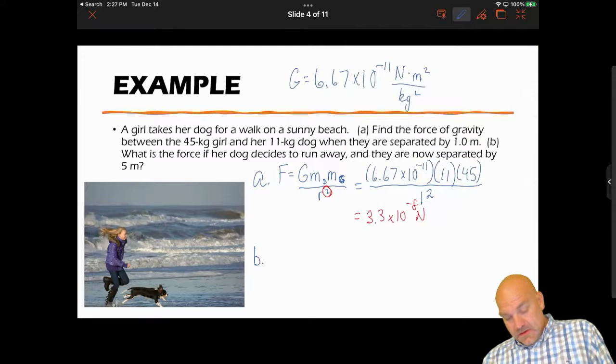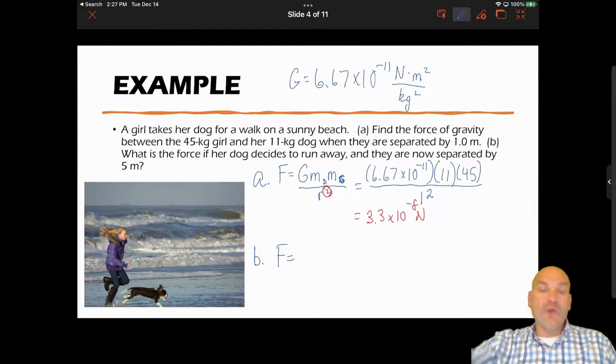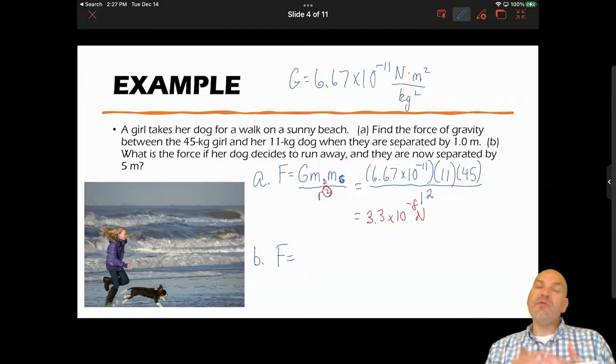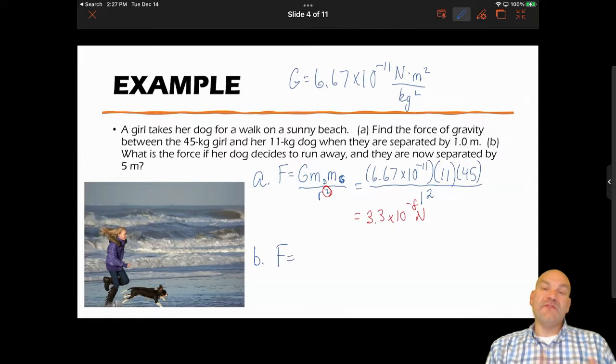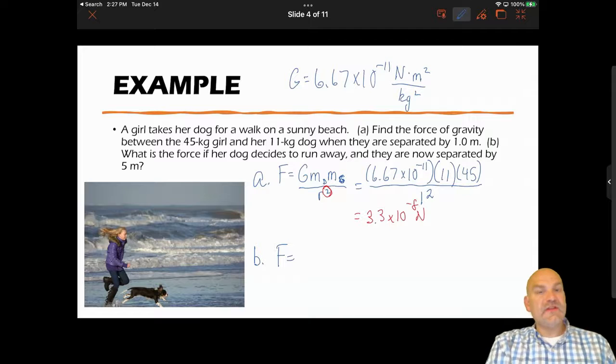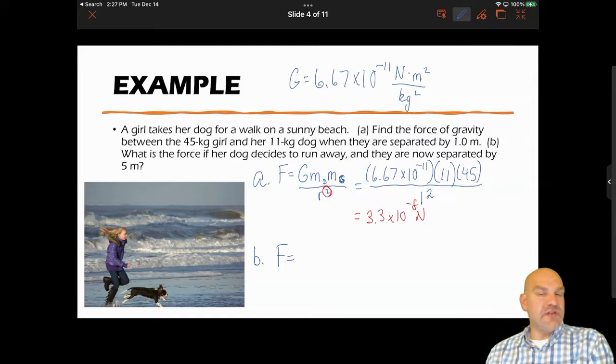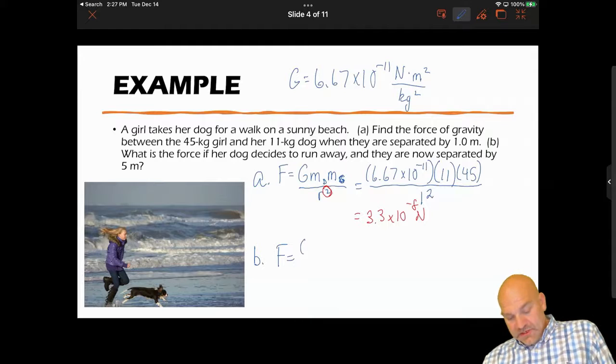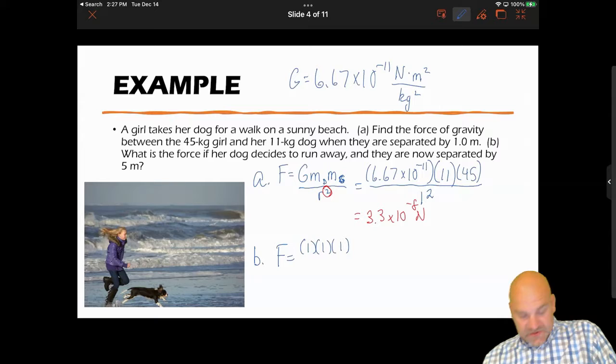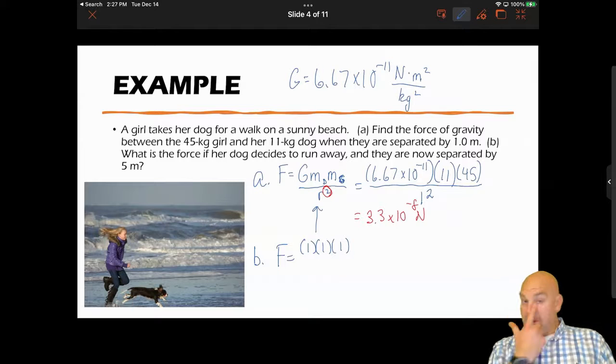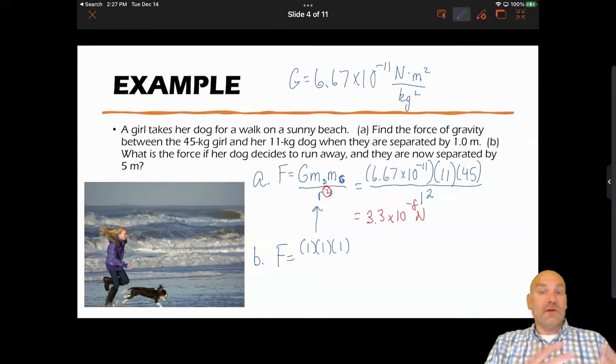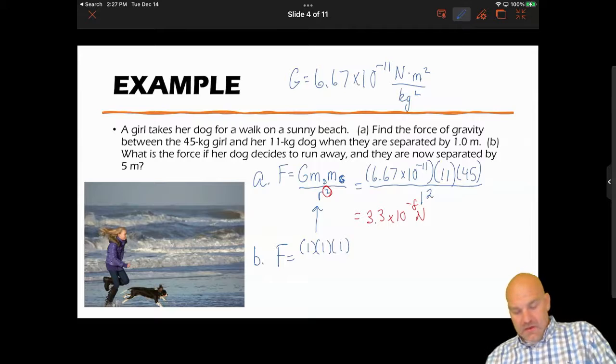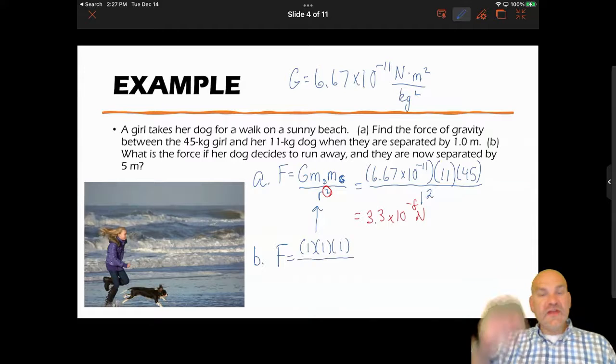Now part B, now the dog runs away. So let's apply factors of change here. We're going to plug in a one for everything that stays constant and then we're going to plug in the factor of change for the one that changed. What does that mean? Well, G is going to stay the same, we still have the dog and the girl, we're still using this equation here, but instead of actually plugging in those values we're going to do our factors of change method.